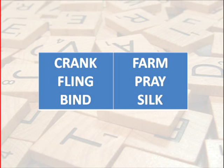In this list of words — crank, fling, bird, farm, prey, and silk — R, L, and N emerge as soft consonants.